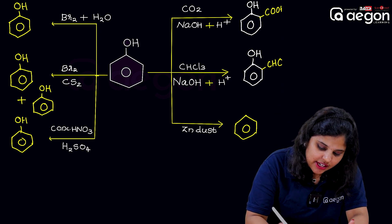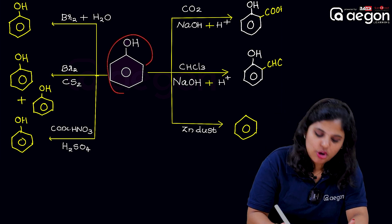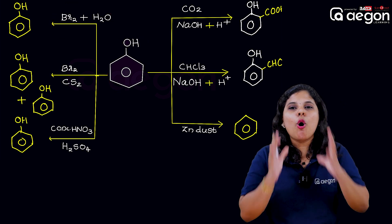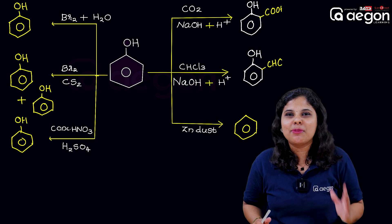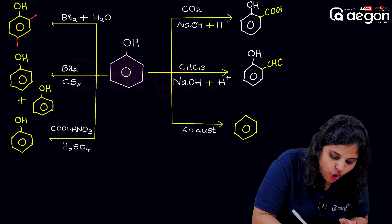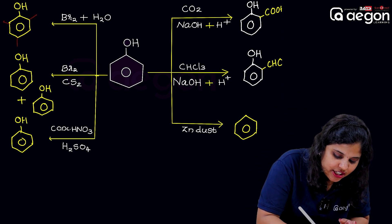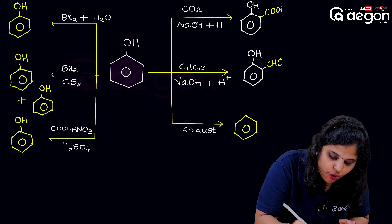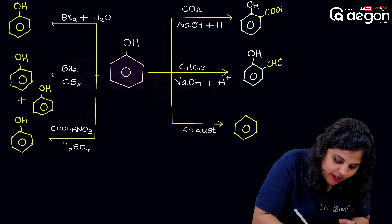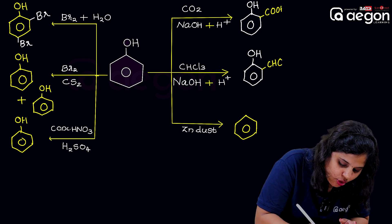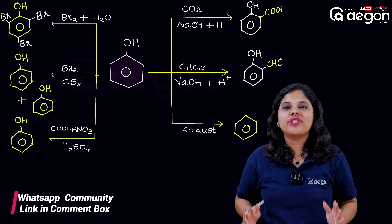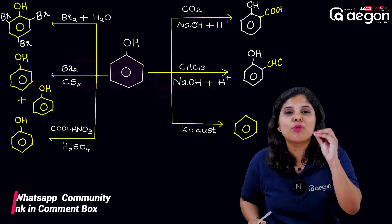Next one: the reaction of phenol with bromine water. Bromine water reacts with phenol. What product do you get? 2,4,6-tribromophenol. This is 2,4,6-tribromophenol — here is the bromine at positions 2, 4, and 6.